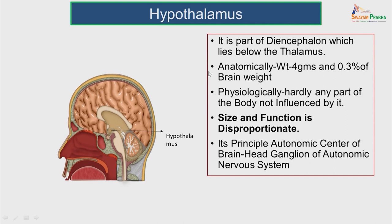The hypothalamus is a part of the diencephalon which is below the thalamus. Below the hypothalamic sulcus, we see the hypothalamus. Anatomically, it weighs about 4 grams and is 0.3 percent of the total brain weight. Physiologically, there is hardly any part of the body which is not influenced by the hypothalamus, so the size and function are disproportionate. It is called the head ganglion of the autonomic nervous system.